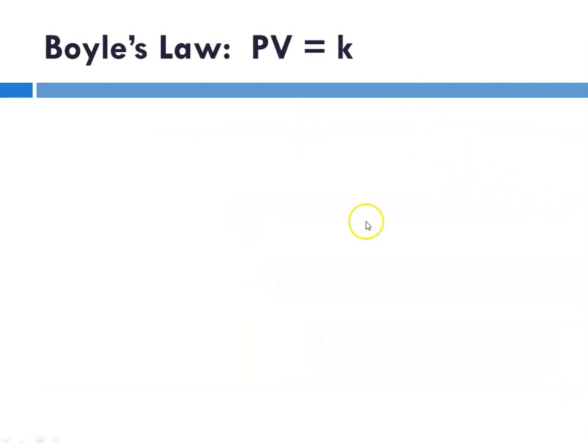Boyle's law is written mathematically as P times V equals a constant. That's because there's this inverse relationship: if one goes up, the other goes down, so when you multiply them together, they equal a constant.